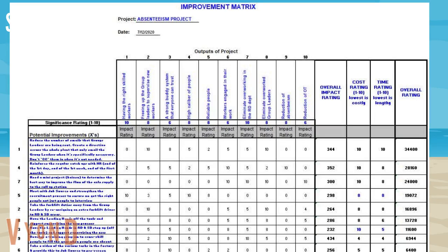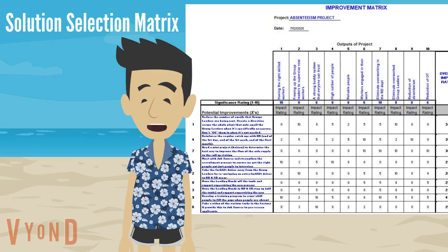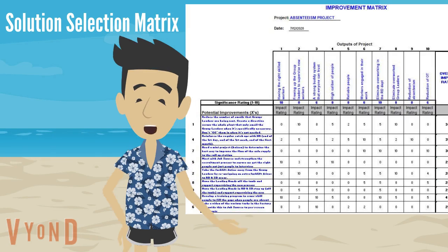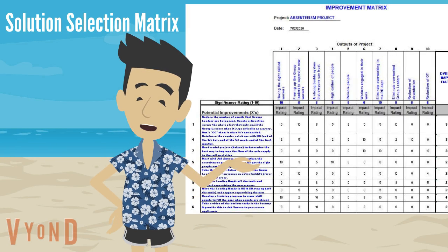Step seven: sort by the highest overall rating — the highest score is the best solution to be implemented first. While initially this matrix may look complicated, it can be modified to suit your requirements, but the same logic should apply of trying to assign a weighting and then calculate the final score to bring prioritization to a set of competing solutions.